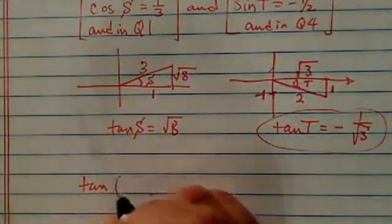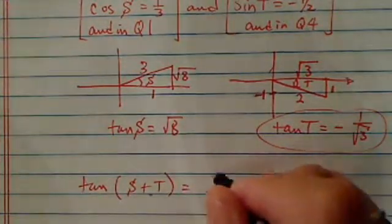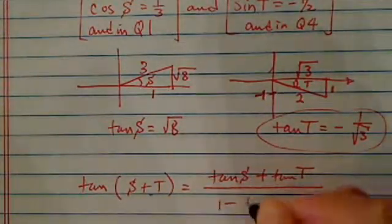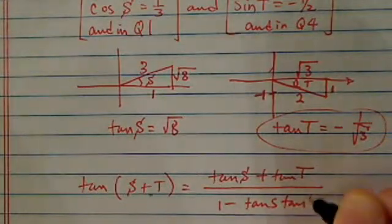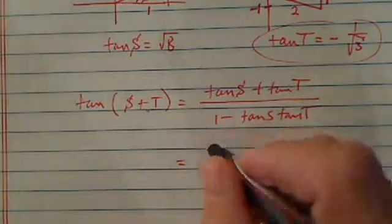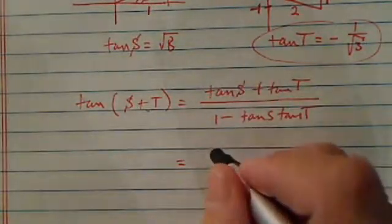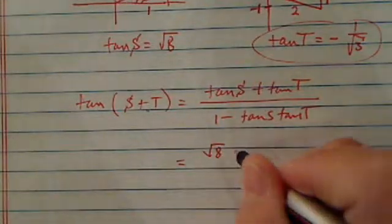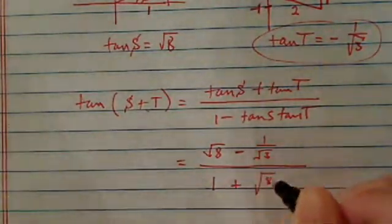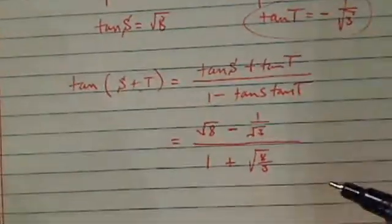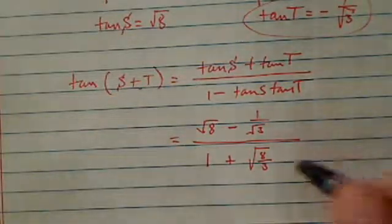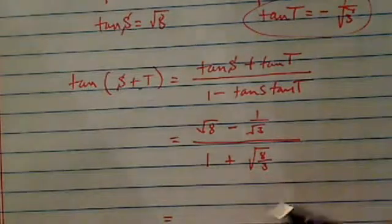From there, it's pretty straightforward, S plus T. Like I said before, it's tangent of S plus tangent of T divided by one minus the product of the two. So let's substitute in there. I have a feeling the whole problem is really about how good you can simplify this. Tangent of S as we found earlier is radical eight, minus one over radical three. One is going to be plus because minus and minus is going to be plus. So from here, 90% of work is done as far as trig wise. Now we need to simplify this so we can have a better looking answer.